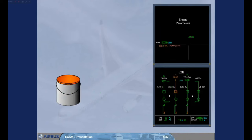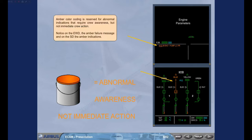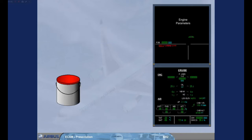Amber color coding is reserved for abnormal indications that require crew awareness but not immediate crew action. Notice on the Engine Warning Display the amber failure message and on the System Display the amber indications. Red color coding is reserved for serious parameter exceedance and warnings that require immediate crew action. Notice the red warning message on the Engine Warning Display.